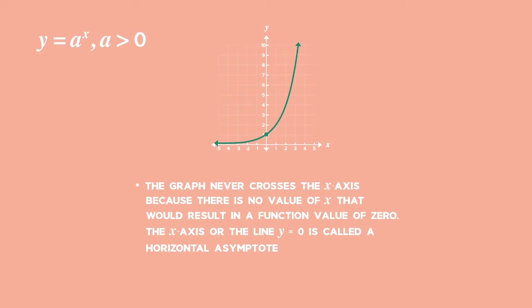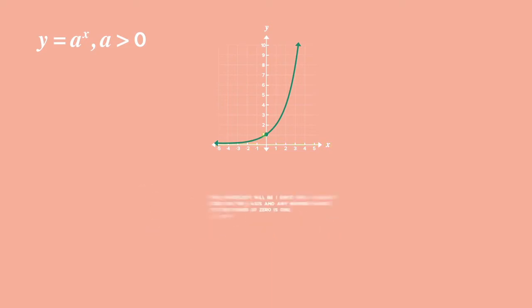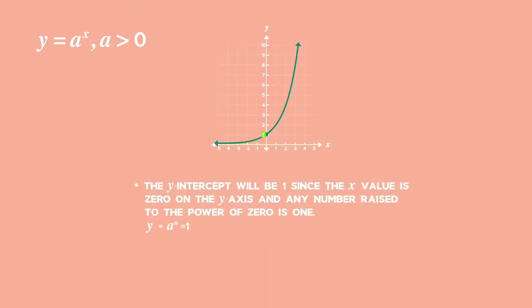Since the exponential graph never touches or crosses the x-axis, the x-axis or line y equals zero is called a horizontal asymptote. The y-intercept will be one, since the x value is zero on the y-axis and any number raised to the power of zero is one.